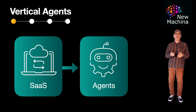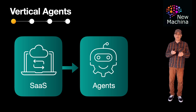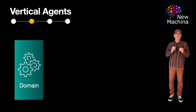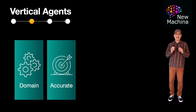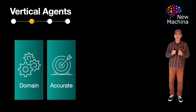Let me give you a little more detail on the nature of these vertical agents. As I mentioned earlier, they will have domain specialization. From the start, they will be trained and fine-tuned on domain-specific data, language, and workflows. Vertical agents will also have high accuracy, because given that they operate within a limited domain, they can provide more precise and reliable outputs.